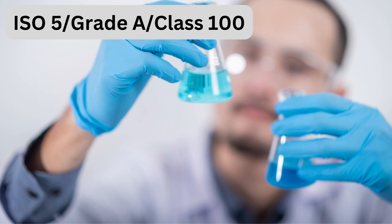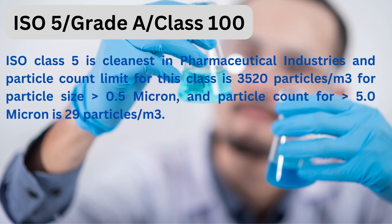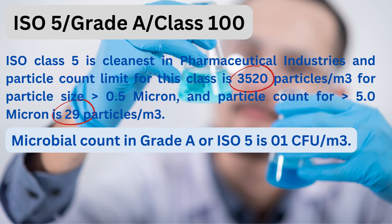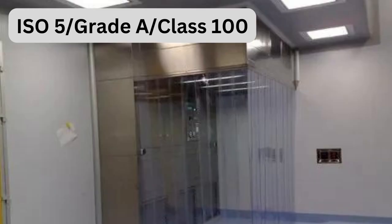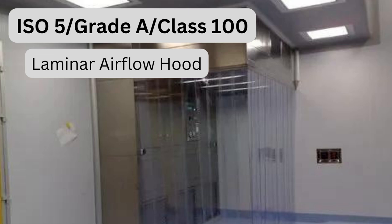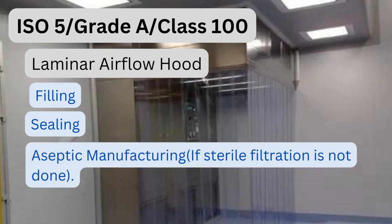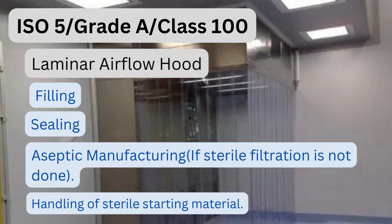ISO 5 corresponds to Grade A and Class 100. ISO class 5 is the cleanest in pharmaceutical industries. Particle count limit is 3,520 particles per cubic meter for particle size greater than 0.5 micron, and 29 particles per cubic meter for greater than 5.0 micron. Microbial count in Grade A or ISO 5 is 1 CFU per cubic meter. Air changes per hour are 240 to 480. Class A is achieved under laminar flow hood and critical operations take place here, for example: filling, sealing, aseptic manufacturing if sterile filtration is not done, and handling of sterile starting material.